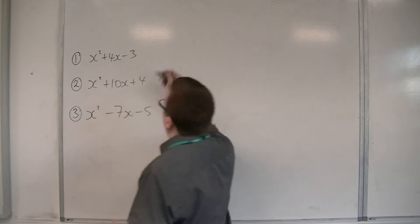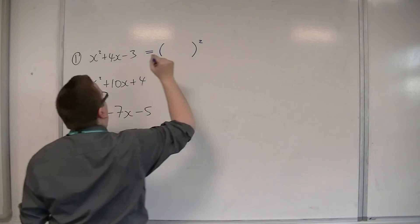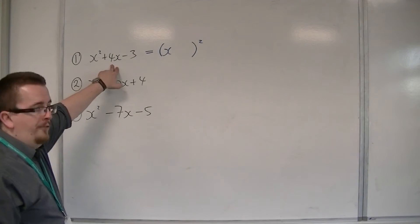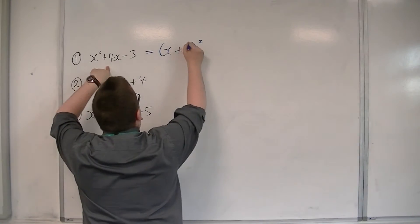So the way that it goes is that I open up a bracket that's going to be squared. I have the x, and then I have half of that number there, half of the 4. So I have 2.